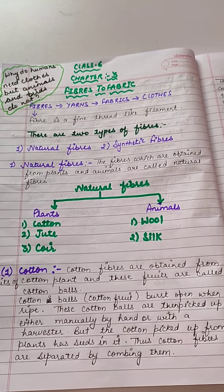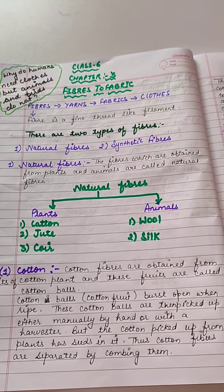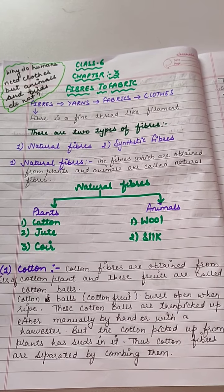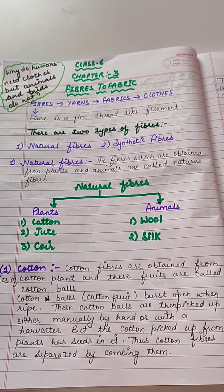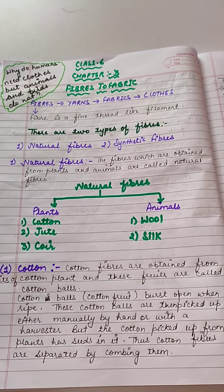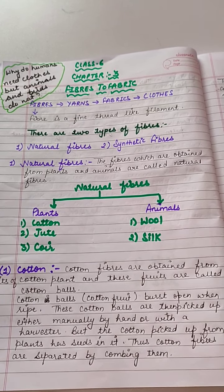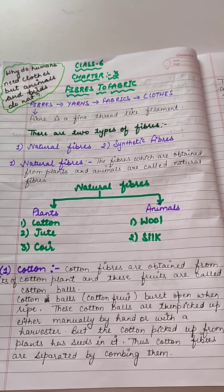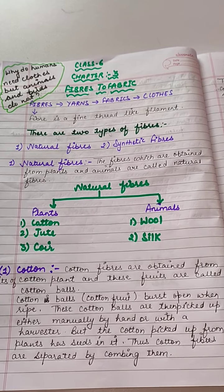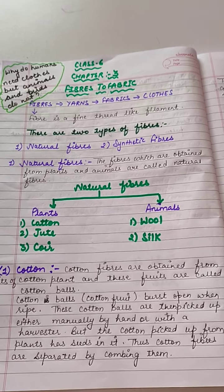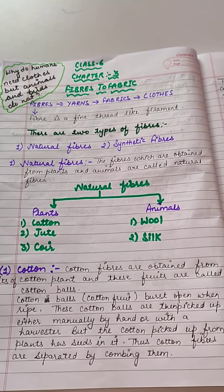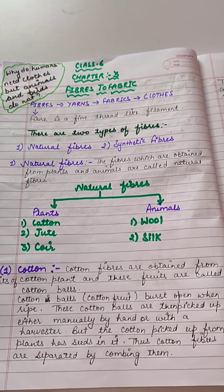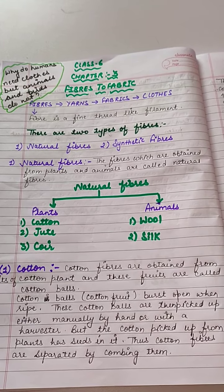Some animals like elephants have very thick skin which protects them from heat, cold, rain, etc. But human beings do not have any one of these — they do not have fur, they do not have thick skin, and they do not have feathers. That is why they need clothes to protect their body from heat, rain, cold, and insects.